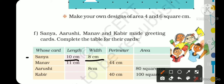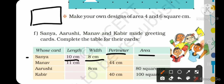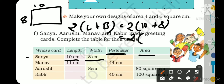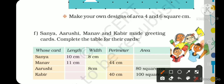Sanya's greeting card has a length of 10 cm and width of 8 cm. We have to find the perimeter and area. The formula for the perimeter of a rectangle is 2 × (L + B). Length is 10 cm, width is 8 cm, so 2 × 18 = 36 cm. So Sanya's greeting card perimeter is 36 cm.